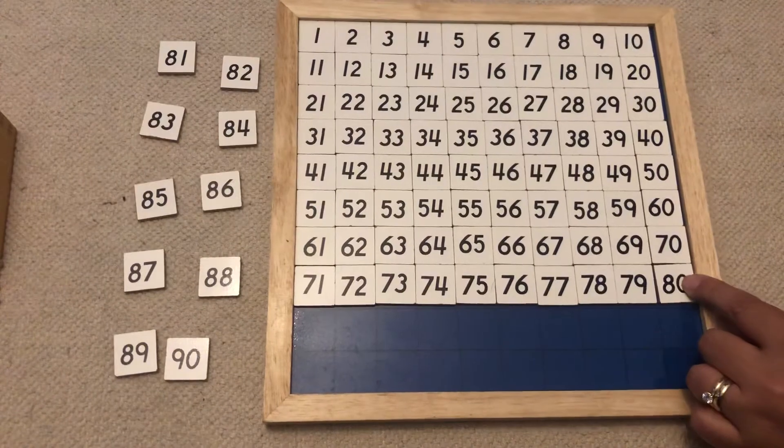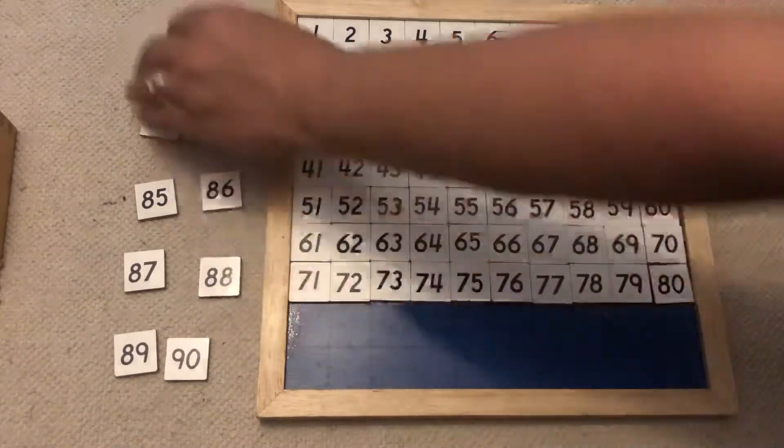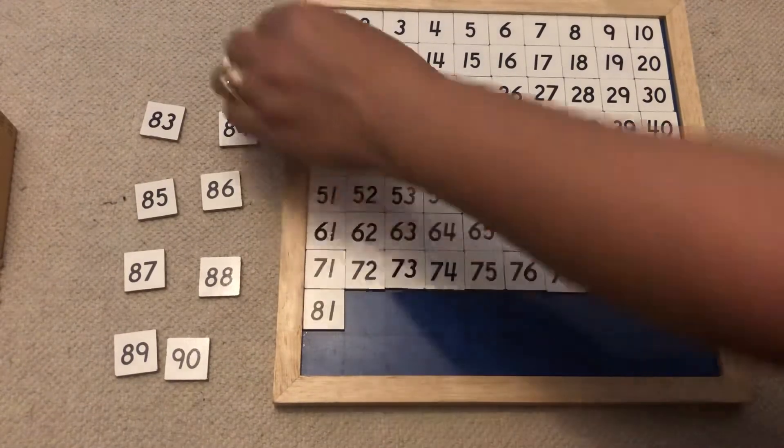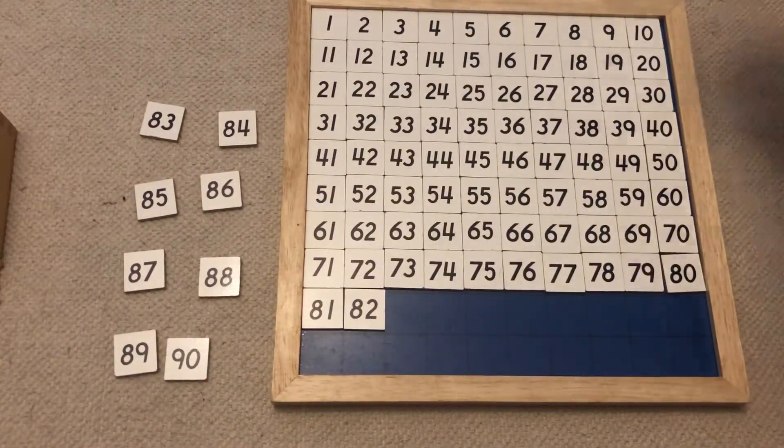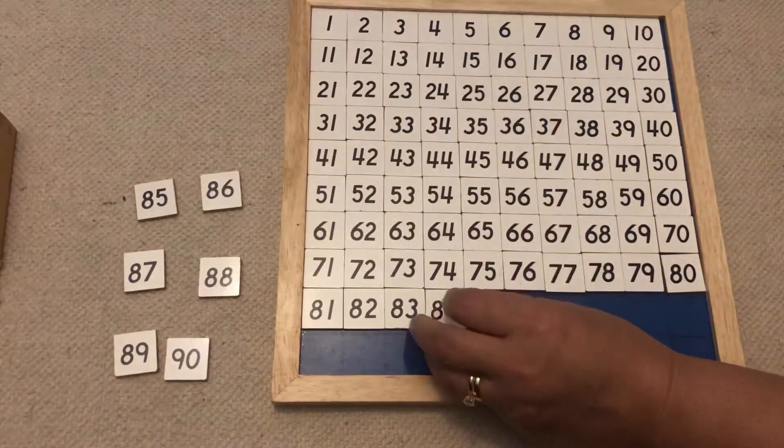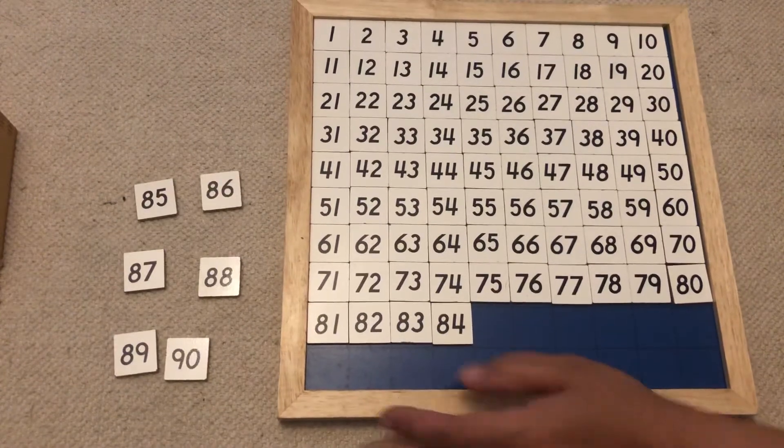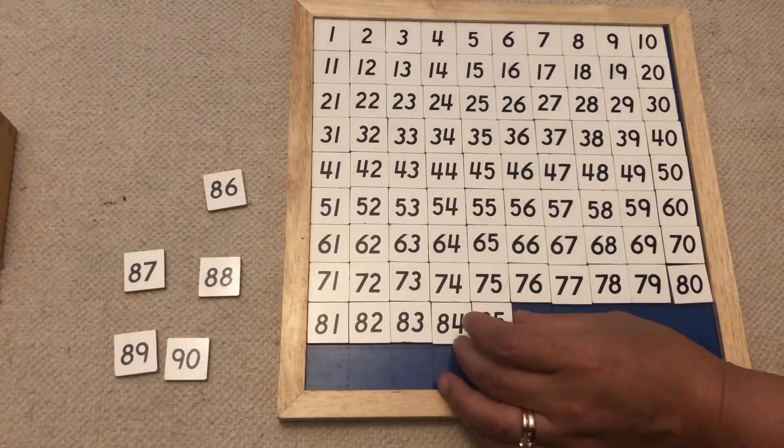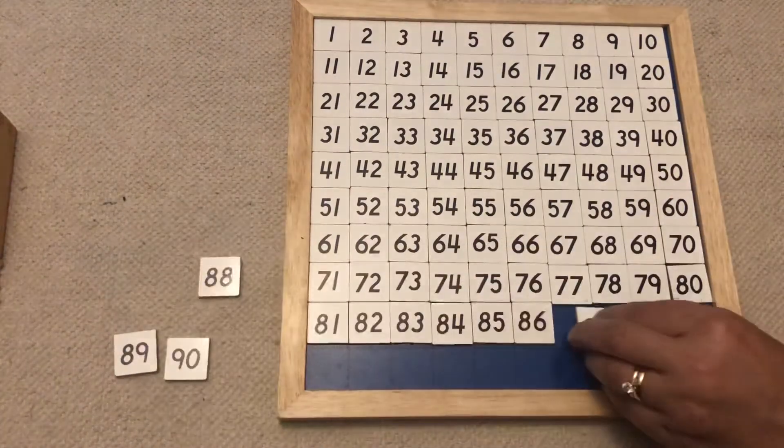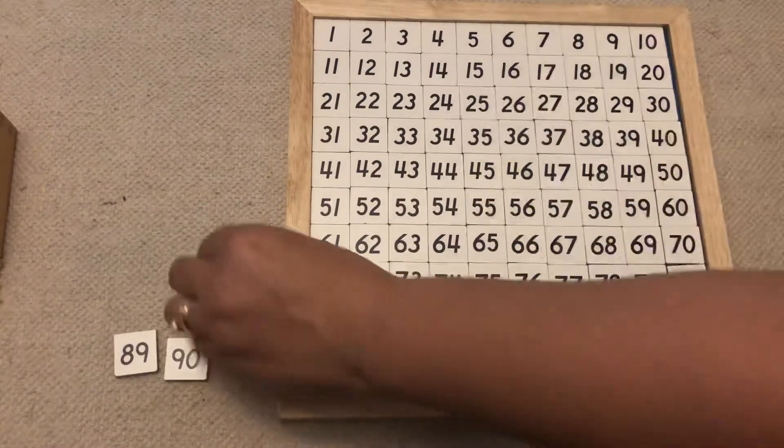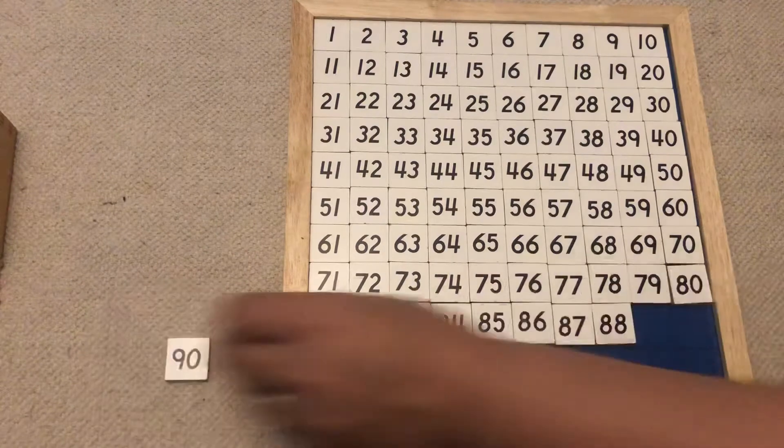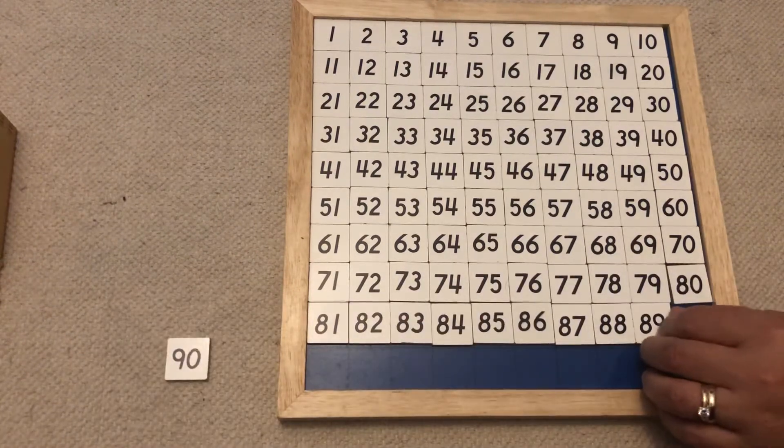After 80 comes 81, 82, 83, 84, 85, 86, 87, 88, 89, 90.